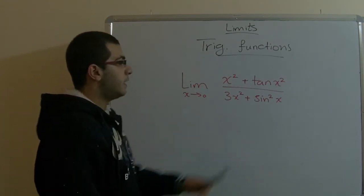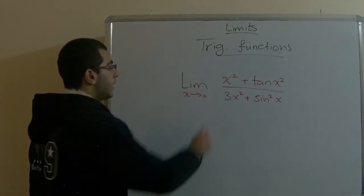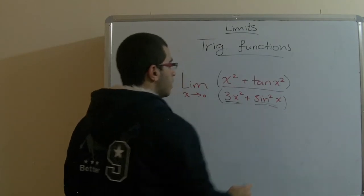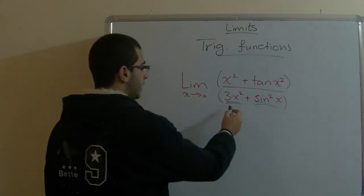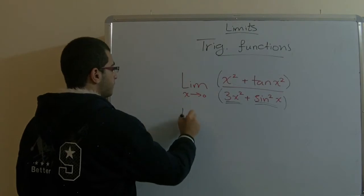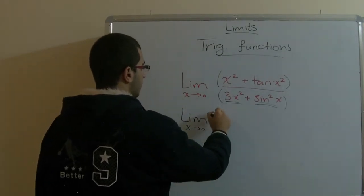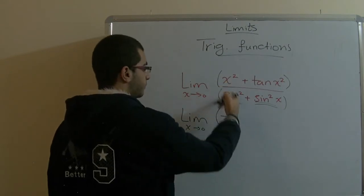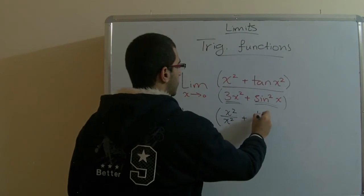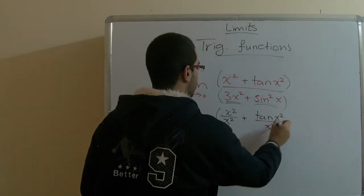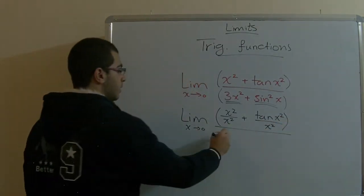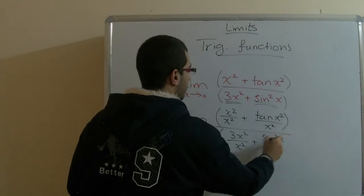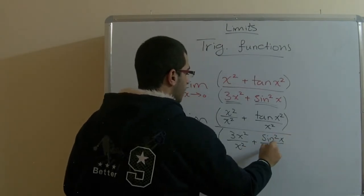So, as usual, we will divide the numerator and the denominator by x. And because here the two expressions are added to each other, we have two items added to each other. So, when we divide by x, the x will be distributed inside the brackets as we will see. So, the limit of x approaching zero will be like this. Here we have x to power 2 over x to power 2. We divide by x to power 2. Plus, tan x to power 2 over x to power 2 over 3 x square over x square plus sine square x over x square.